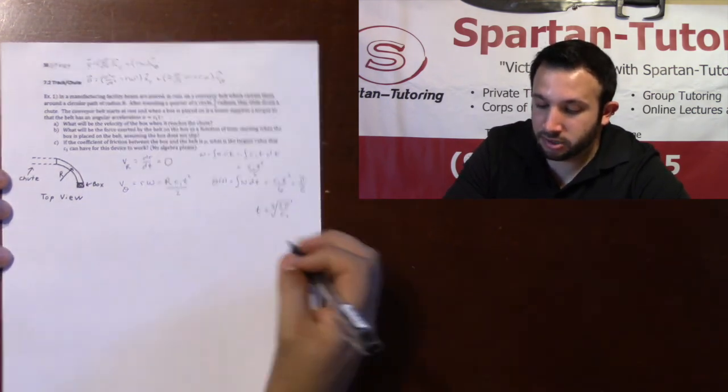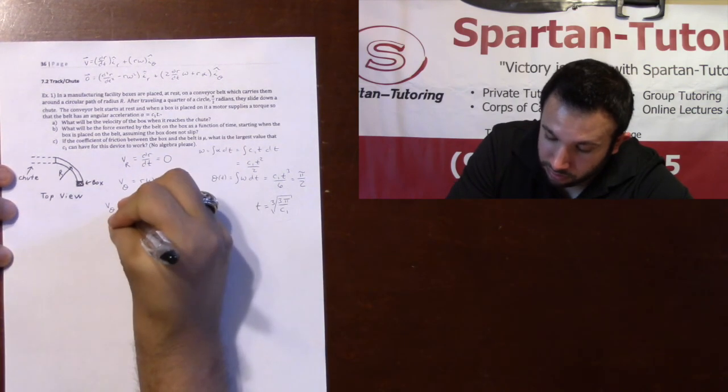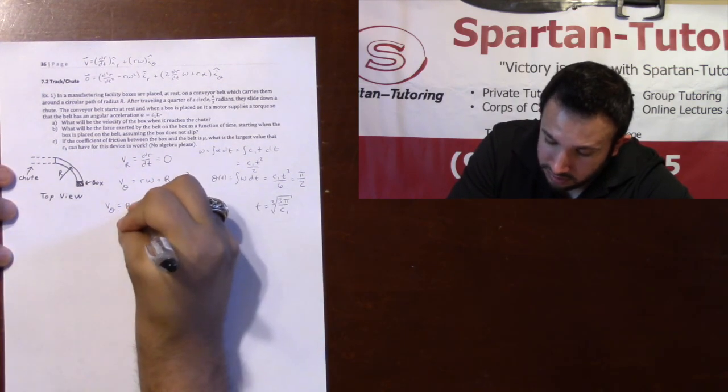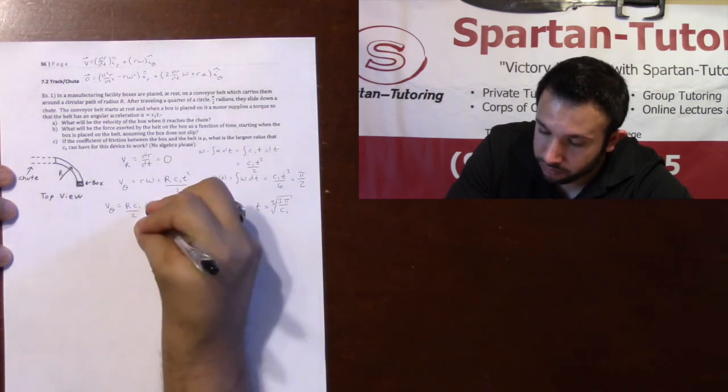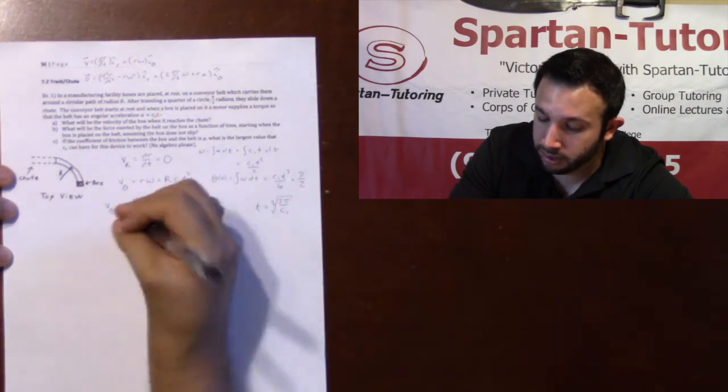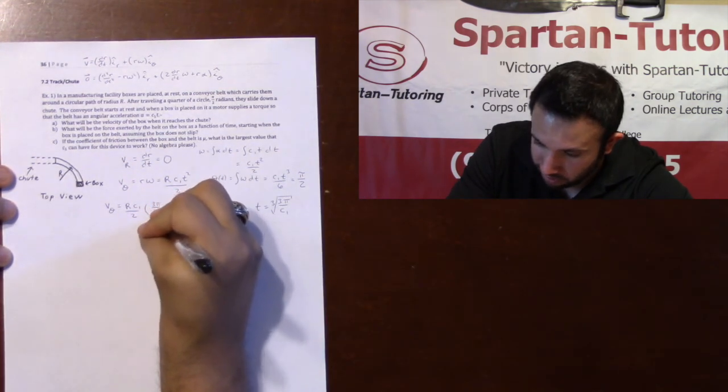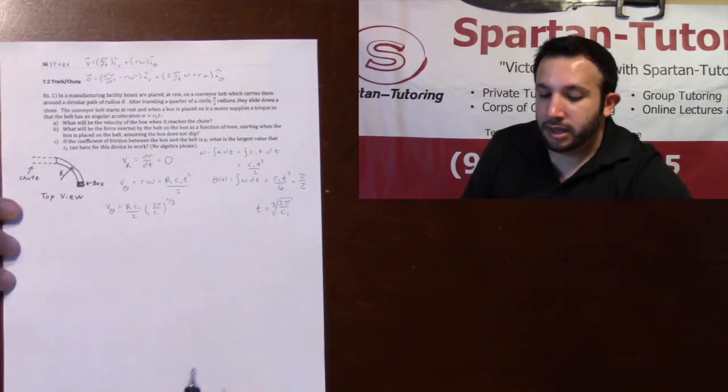Now that you have that, now I can have vθ. vθ is going to be r c1 over 2 times basically all of this to the 2 thirds. The cube root of anything squared is going to be 3 pi over c1 to the 2 thirds.